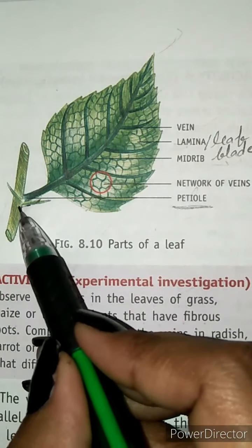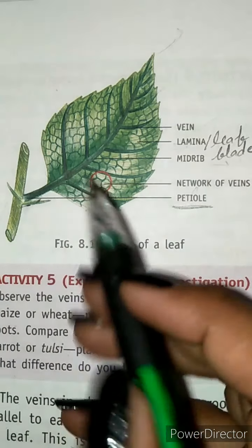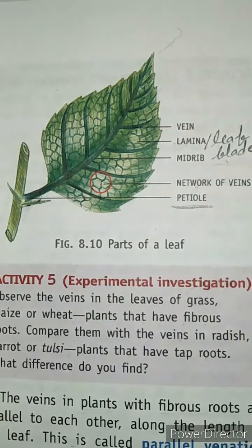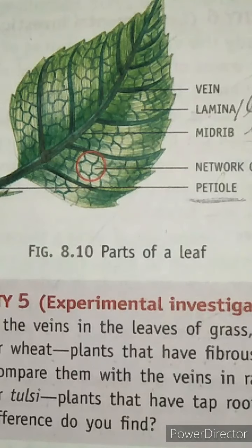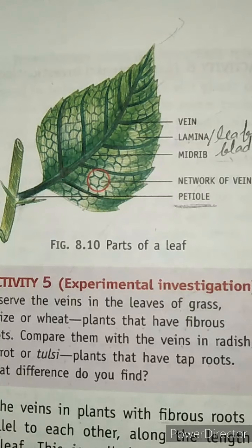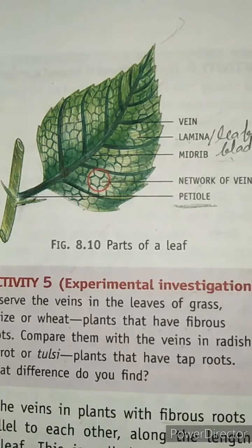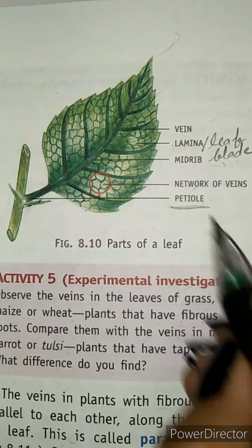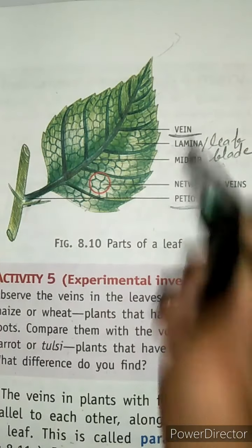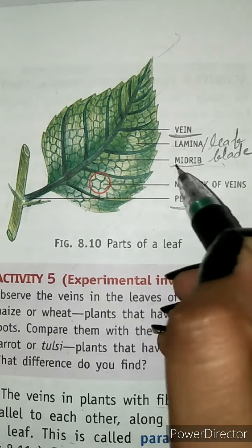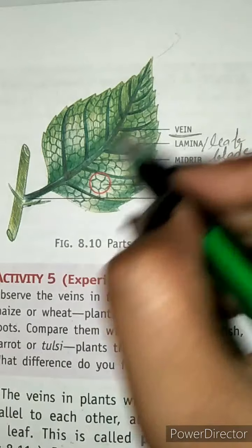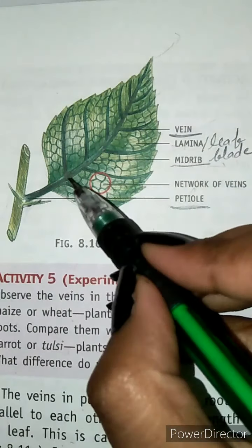Observe the leaf closely. Can you see some lines on the leaf? These dark green lines are called veins. The main vein of the leaf is called the midrib.